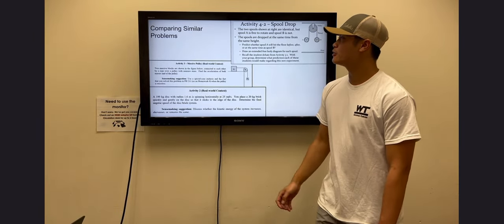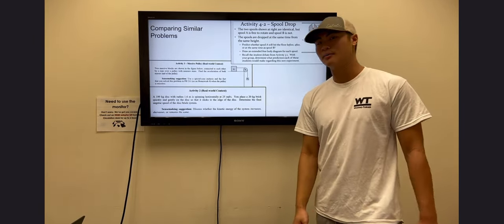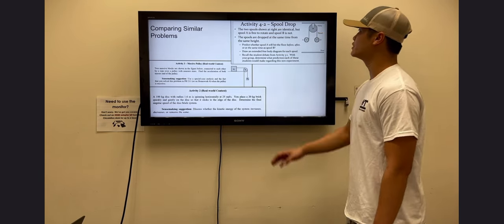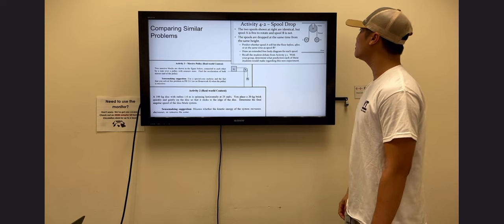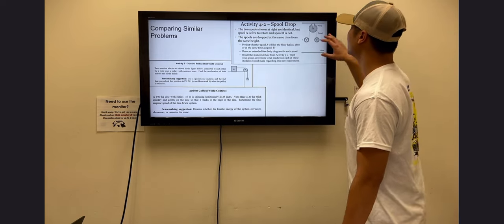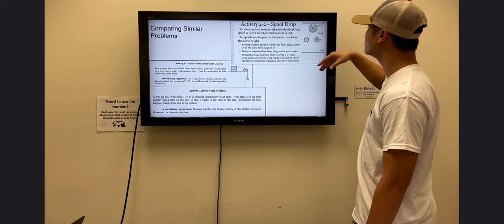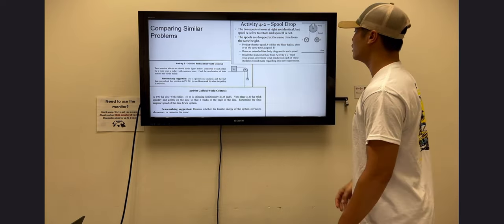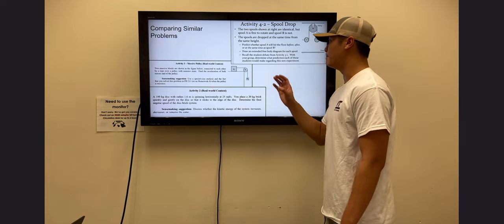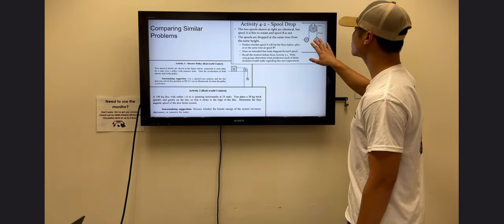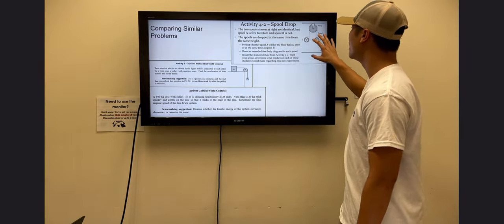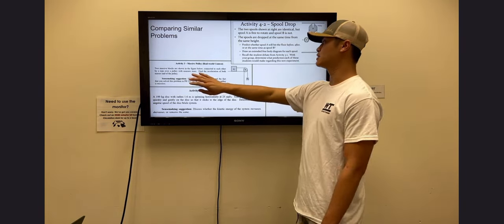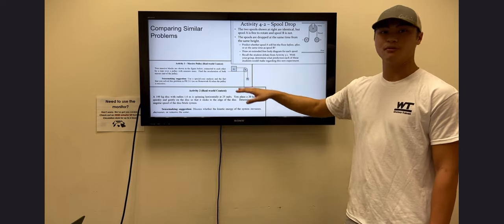We are comparing similar problems from our previous lectures, studios, and homeworks. The first activity was the spool drop, where we calculated the acceleration of the spools as they dropped, as well as activity three from our homework. One difference was activity 4.2, where we calculated with a zero-mass pulley, versus activity three, where we incorporated the mass of the pulley.